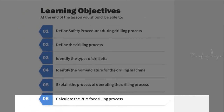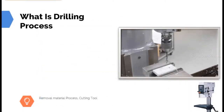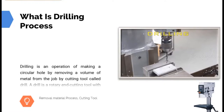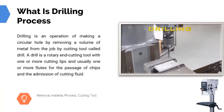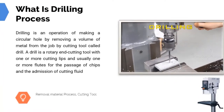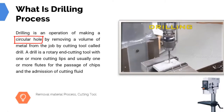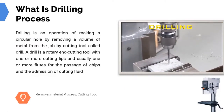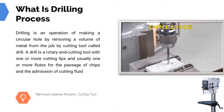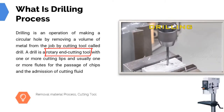And last, calculate the RPM for the drilling process. Let's move on. What is the purpose of a drilling operation? Drilling is an operation of making a circular hole by removing a volume of metal from the job by a cutting tool called the drill. The drill is a rotary end cutting tool with one or more cutting lips.